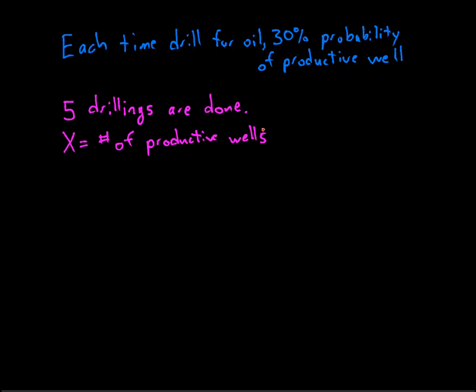We have three, we have four, we have five productive wells. We could have more than five because we only drill five times.